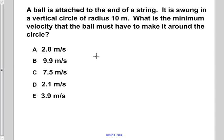A ball is attached to the end of a string. It is swung in a vertical circle of radius 10 meters. What is the minimum velocity that the ball must have to make it around the circle?